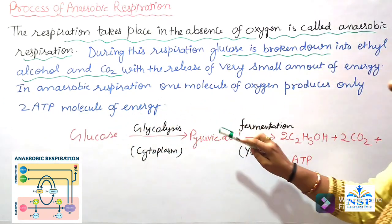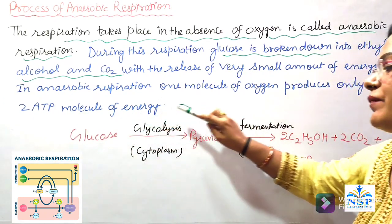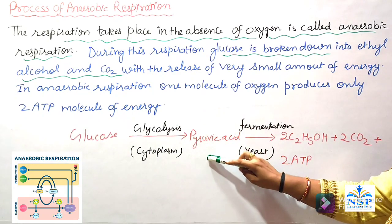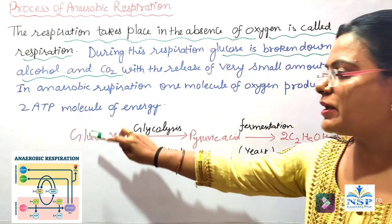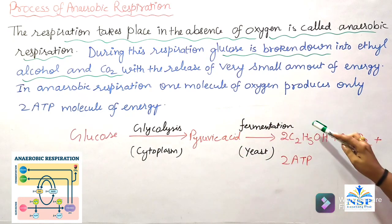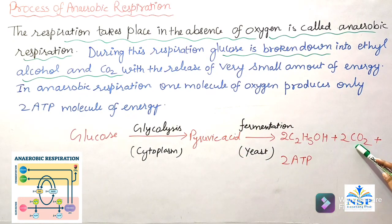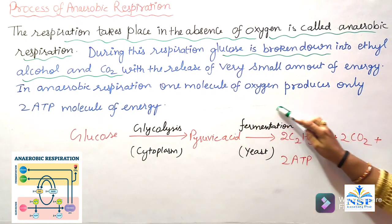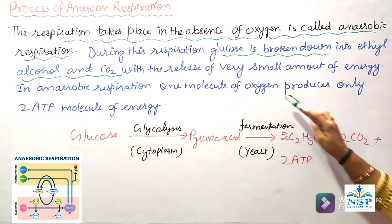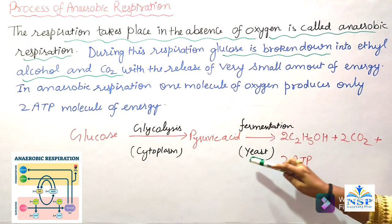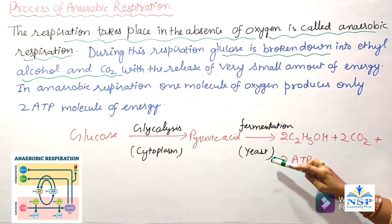Glucose is converted to pyruvic acid through the process of glycolysis in the cytoplasm, which is the same in anaerobic respiration. After that, pyruvic acid is changed into ethyl alcohol, carbon dioxide, and ATP molecules. This process is called fermentation, and takes place in the absence of oxygen. This occurs mainly in microbes, and we see it in yeast.